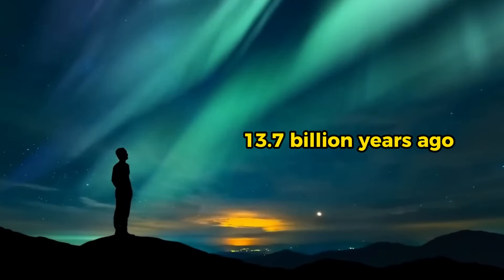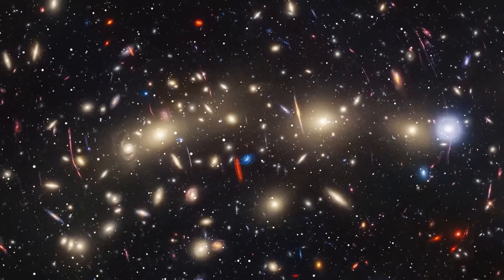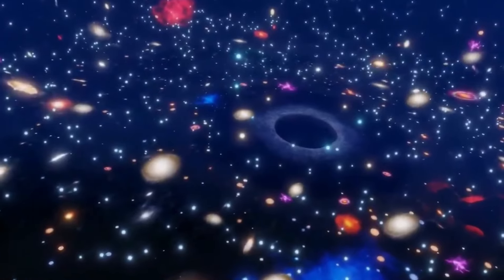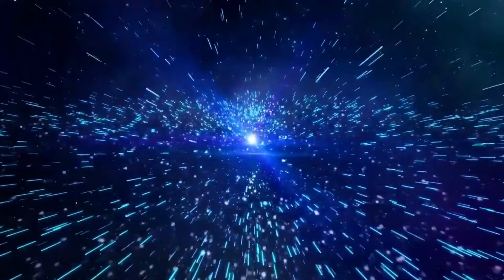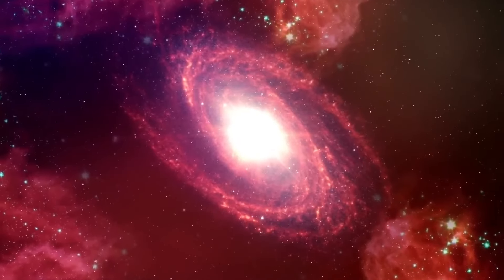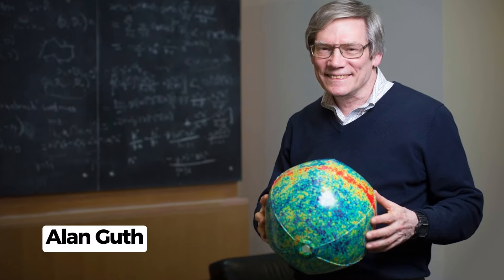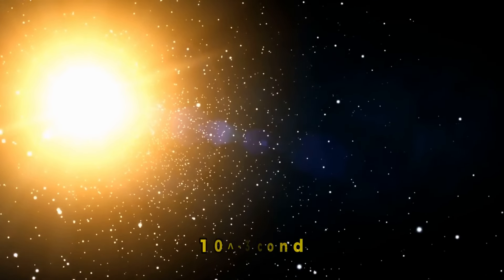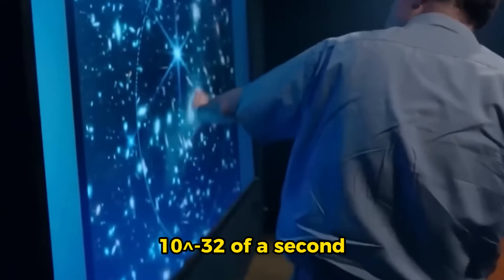More than 13.7 billion years ago, the universe was in a very dense place called a singularity that was very hot and had an infinite amount of matter. Following that, there was a huge and sudden growth. This sped up the expansion of the universe faster than light. Alan Guth's groundbreaking idea from 1980 was the first to talk about this era of cosmic inflation, which lasted only a few hundredths of a second or 10 to the power of negative 32 of a second.